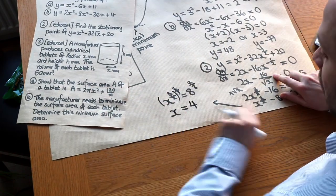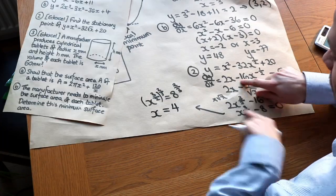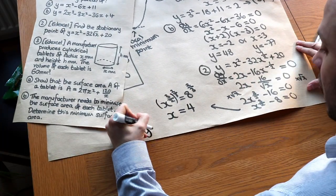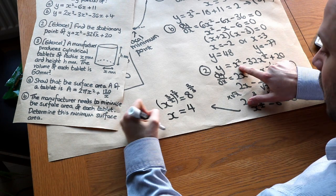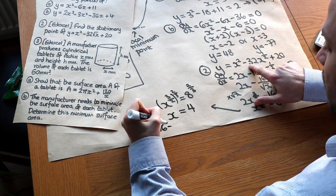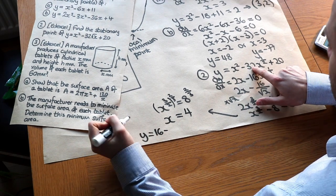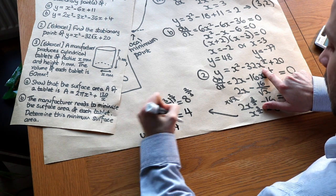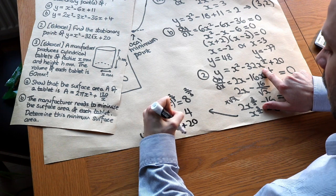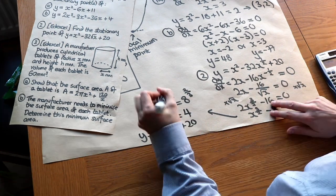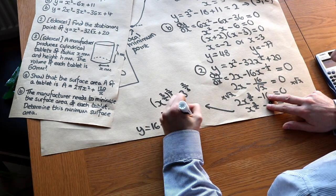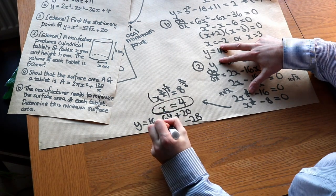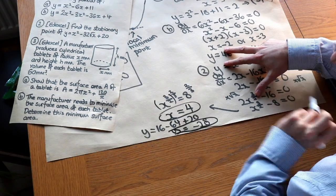Now we can find the y value by substituting x = 4 into the original equation: y = 4² − 32√4 + 20 = 16 − 32(2) + 20 = 16 − 64 + 20 = −28. So the stationary point is (4, −28).